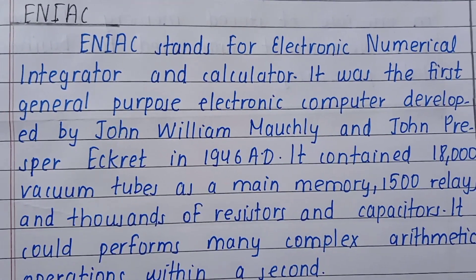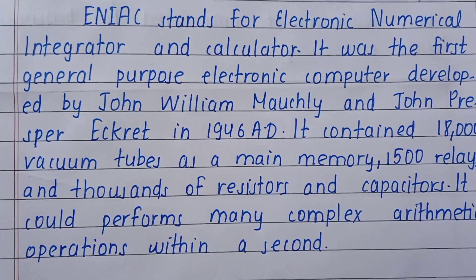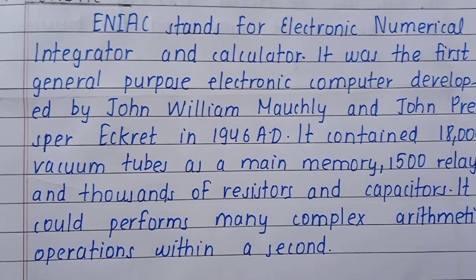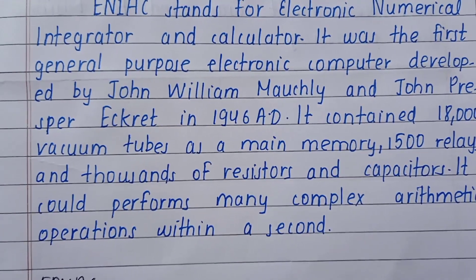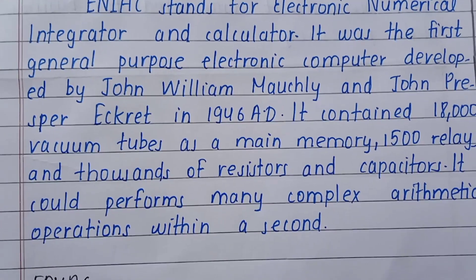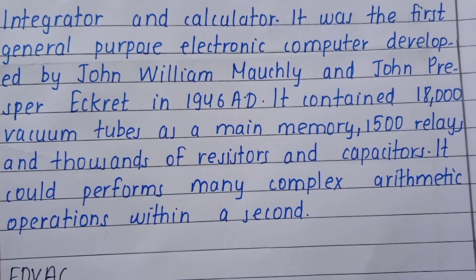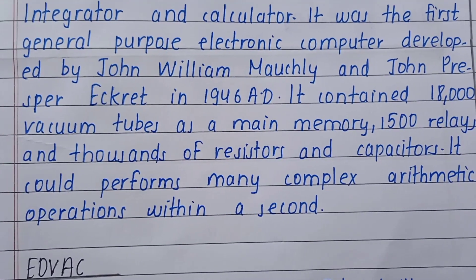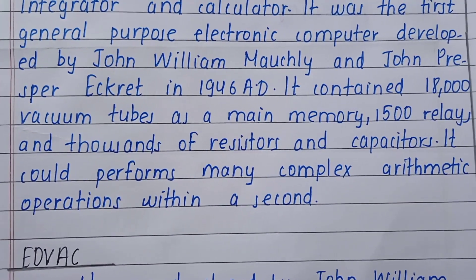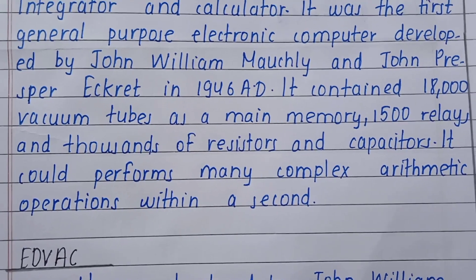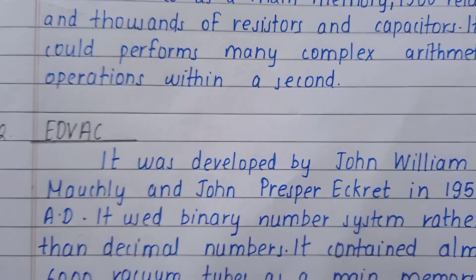ENIAC stands for Electronic Numerical Integrator and Calculator. It was the first general-purpose electronic computer, developed by John William Mauchly and John Presper Eckert in 1946 AD. It contained 18,000 vacuum tubes as main memory, 1,500 relays, and thousands of resistors and capacitors. It could perform many complex automatic operations within a second.